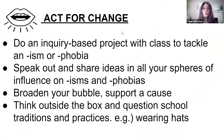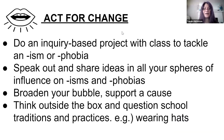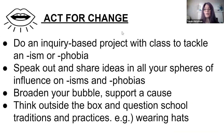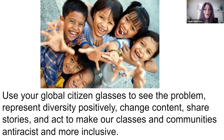The last part is acting for change. Do an inquiry-based project with class to tackle an ism or phobia, either as a whole class or individually. Speak out and share ideas about isms and phobias in all your spheres of influence — not just in your classroom, but with friends, even somebody at the coffee shop. Broaden your bubble, support a cause, and think outside the box. You can even question school traditions and practices. A friend of mine who's indigenous hates the no-hats rule because kids wore hats because they couldn't afford haircuts and couldn't control their hair. That made me think about my own privilege. I hope you use your global citizen glasses to see the problem, represent diversity positively, change content, share your stories, and act to make our classes and our communities more anti-racist and inclusive.